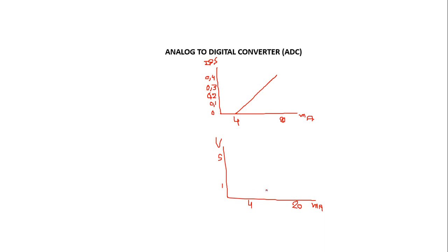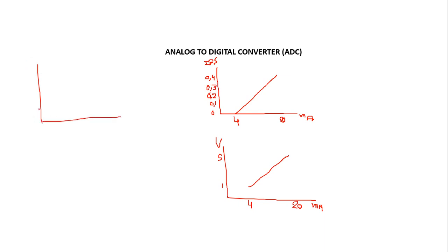With a resistor of 250 ohms we can convert the signals from the current signal into a voltage signal because of Ohm's law. So we have this line, and we are going to introduce the voltage from 0 to 5 volts to our Arduino.